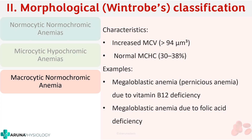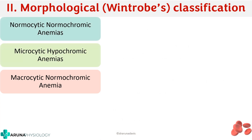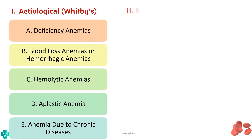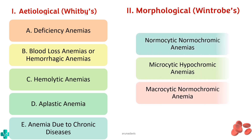That completes the morphological classification — normocytic, microcytic, or macrocytic. We have now covered both the etiological and morphological classifications. The main thing to memorize is the five categories or causes in the etiological classification. I hope this video is useful for you. Thank you.